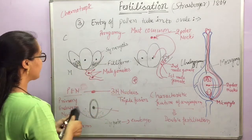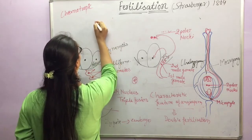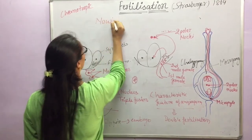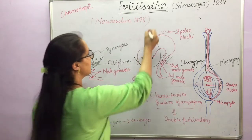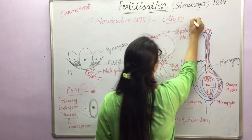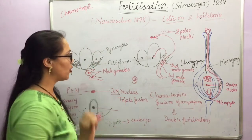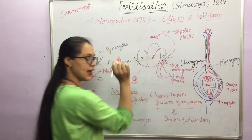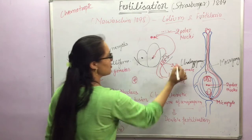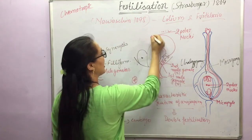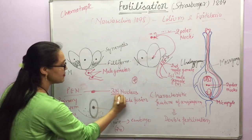This fertilization process — double fertilization — was given by Navaschin in 1898. He studied it in Lilium and Fritillaria. The egg cell is haploid, the male gamete is also haploid, and the zygote is diploid. The other male gamete is haploid, and the polar nuclei are also haploid — so N plus N plus N gives 3N, the triploid primary endosperm nucleus. That was all about fertilization.